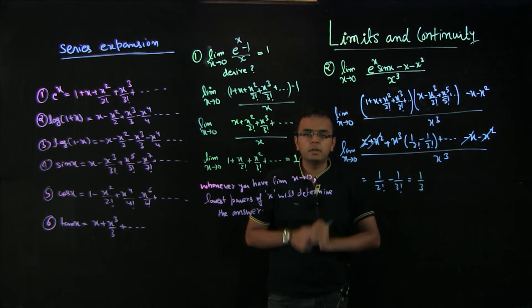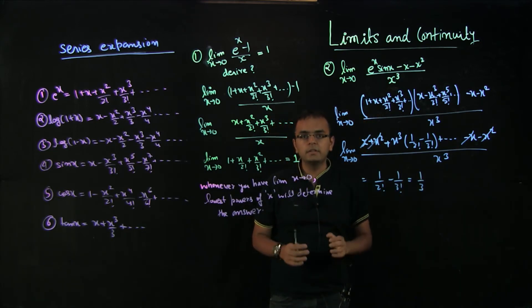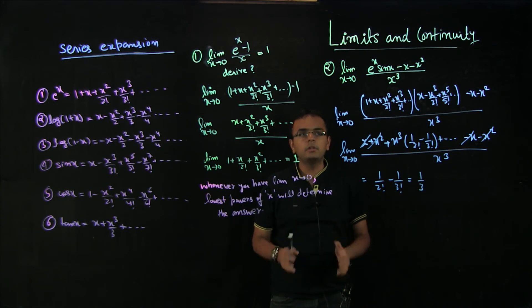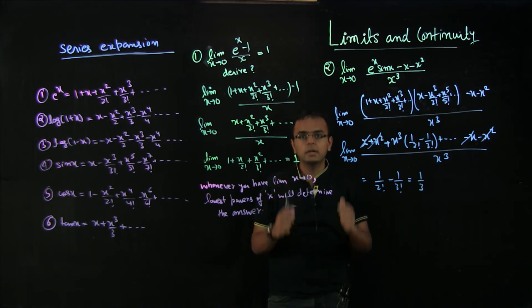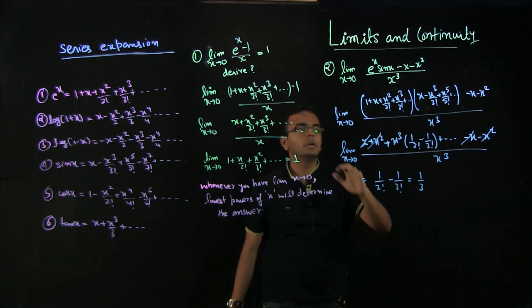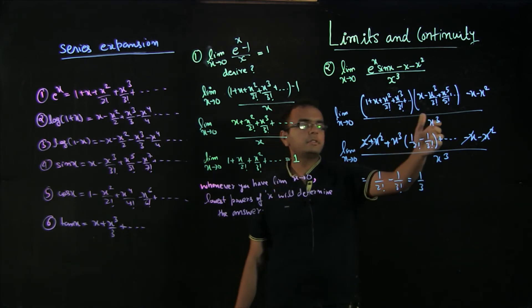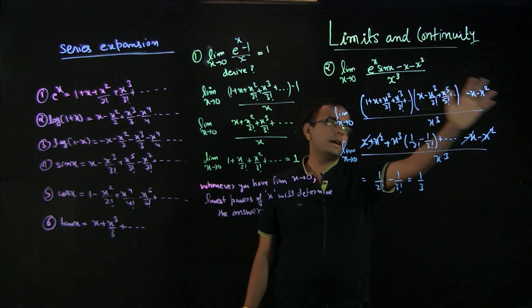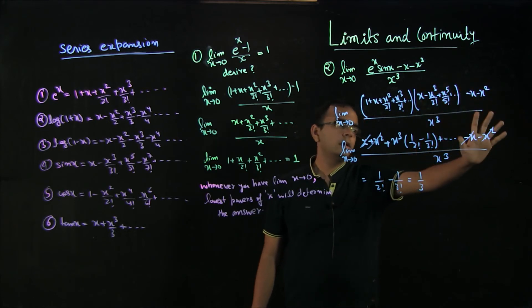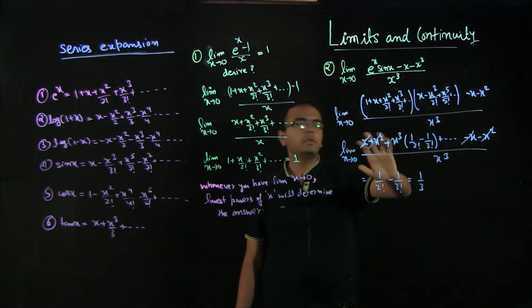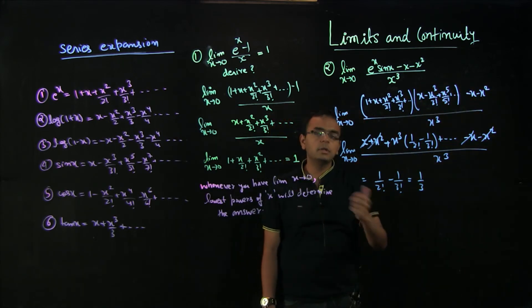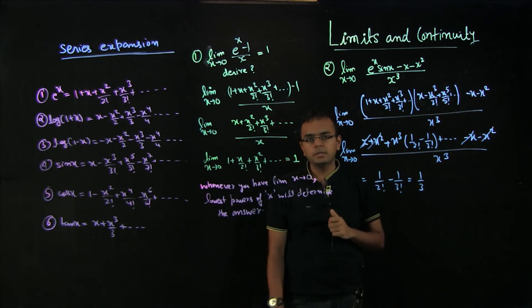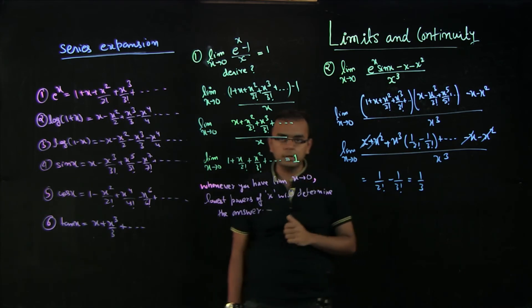The idea is to retain powers till x³; the higher powers would not matter. Beautifully, the smaller powers of x cancel out, and you can get the answer very quickly.